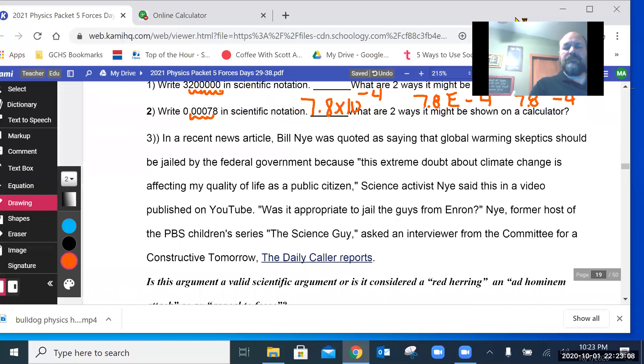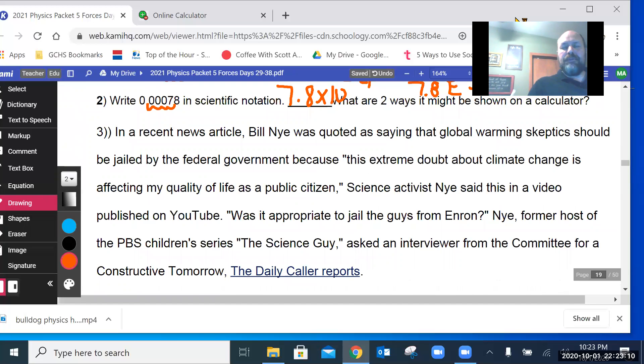In a recent news article, Bill Nye, that's Bill Nye the science guy, he was quoted as saying the global warming skeptics should be jailed by the federal government because, quote, this extreme doubt about climate change is affecting my quality of life as a public citizen. Science activist Nye said this in a video published on YouTube.